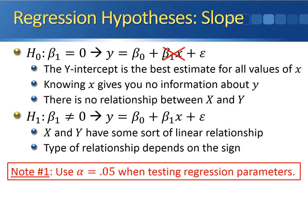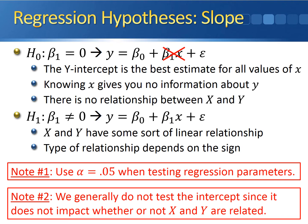A couple of notes whenever we perform a hypothesis test on the slope. We always use a 5% level of significance when testing regression parameters. And we generally don't test the intercept since it really doesn't impact whether or not x and y are related. All the intercept tells us is where it crosses the y-axis and we're not overly concerned about where that occurs.